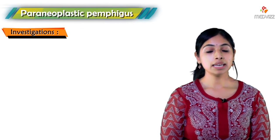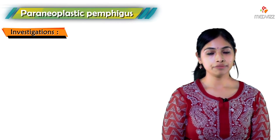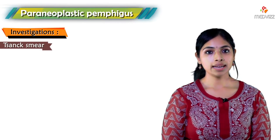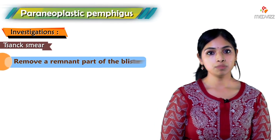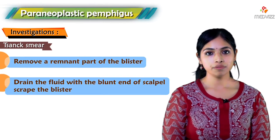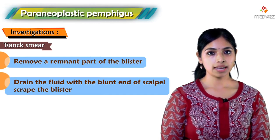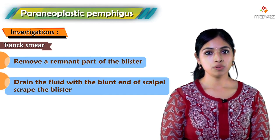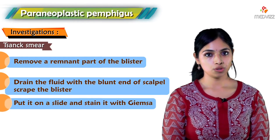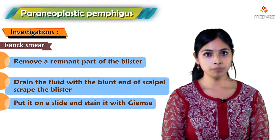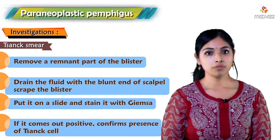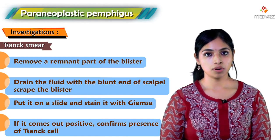A simple bedside investigation we can do is a Tzanck smear. In a Tzanck smear we remove a remnant part of the blister, drain the fluid, and with the blunt edge of the scalpel we scrape the floor of the blister, place it on a microscopic slide, and stain it with Giemsa. The smear is positive if we see a Tzanck cell.